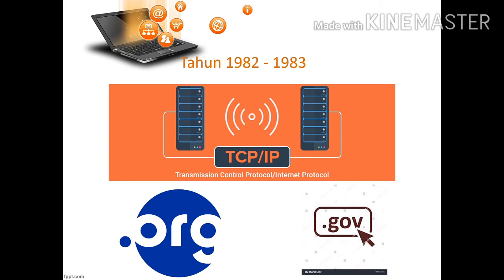Pada tahun 1983, muncullah banyak domain name system atau biasa dikenal dengan nama DNS. DNS itu bisa berupa .org, .gov, .com, .net, .mil, dan masih banyak domain lainnya seperti .co dan .id. Itulah yang biasanya kita gunakan pada saat pengetikan nama email atau nama dari sebuah situs.